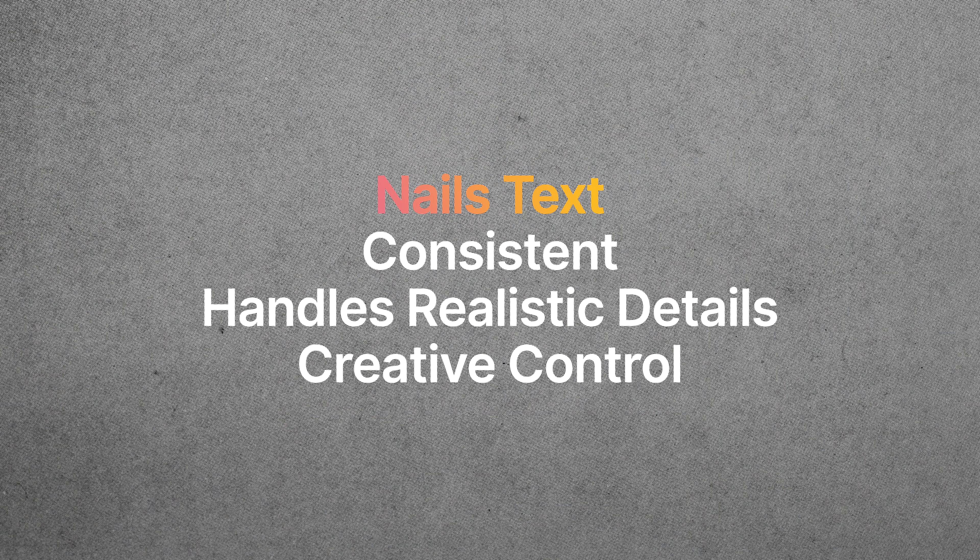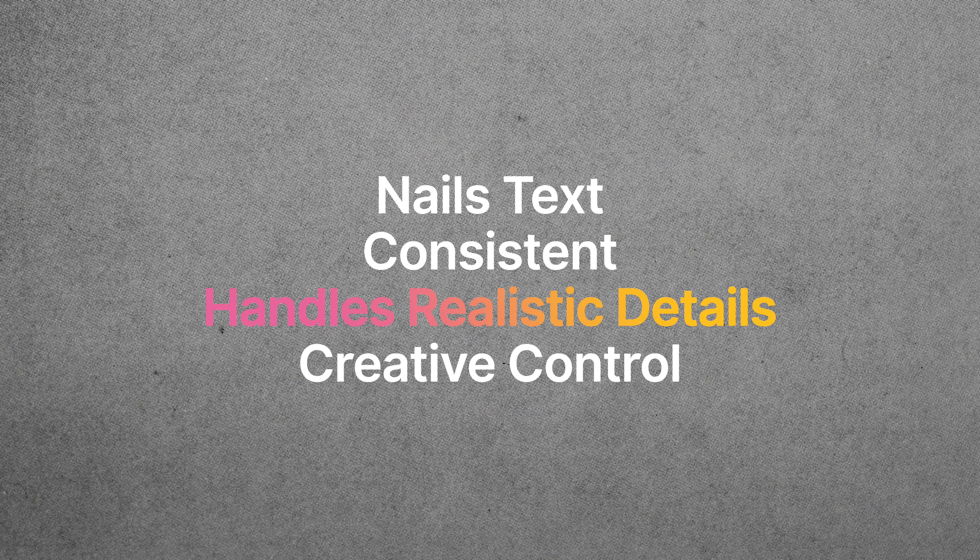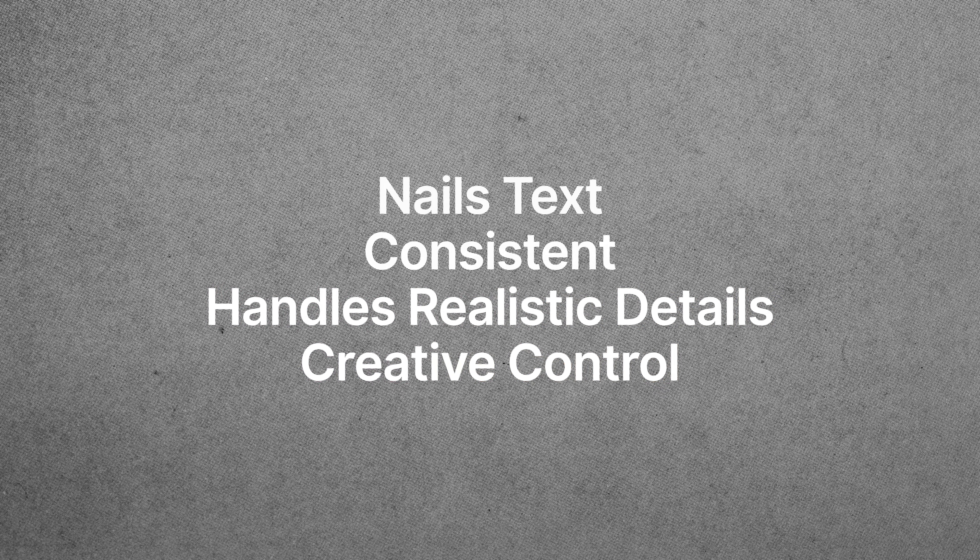The reason this matters to editors and content creators is that this isn't just another AI tool. It nails text, it's consistent, it handles realistic details, and most importantly it gives us creative control over fine details so we can adjust things with consistency. If you're an editor or content creator, you really are going to want to start playing with this as soon as possible. The sooner you do, the bigger the gap becomes between you and everybody else. There's a link in the description to Artlist where you can access this tool — I recommend you start playing with it.